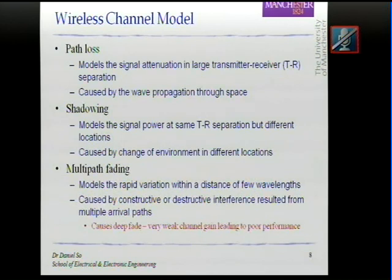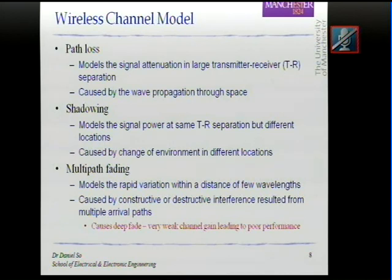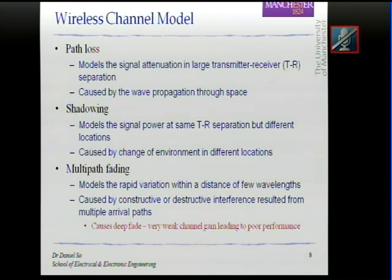The last level of modeling is multipath fading. Multipath fading models the rapid variation within a very short distance. Just like the Old Trafford example — when multiple reflections and multiple paths arrive at the receiver at the same time, those paths arrive at different phases. As you will know from physics, multiple signals arriving at different phases can result in constructive or destructive interference. This is the same phenomenon for multipath fading — some paths are constructive and combine to boost the signal, while others are destructive.